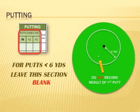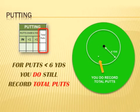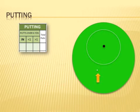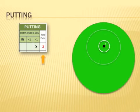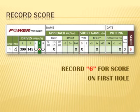For putts less than 6 yards from the hole, leave the performance section blank. But always record total putts per hole for all putts, regardless of the distance of your first putt. Since our chip shot left us about 8 yards from the hole, we record our first putt performance. We miss our first putt and it ends up further than 1 yard, so we mark the greater-than-1 box. We also miss the next putt and record 3 for total putts. Always power track your shots while others are playing or after the hole is complete. The last thing you record is your final score, which is 6.